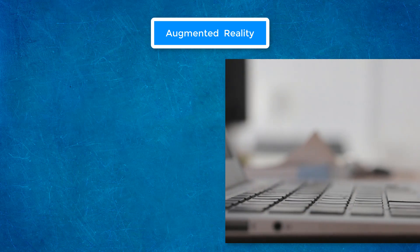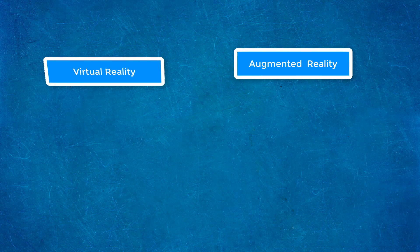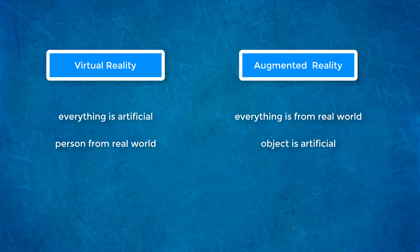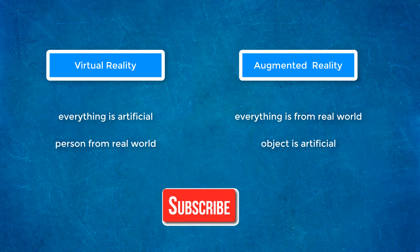So in virtual reality, everything is artificial and you are from the real world. But in augmented reality, everything is from the real world except that object which you want. If this cleared your mind, don't forget to subscribe and support me. See you in the next one.